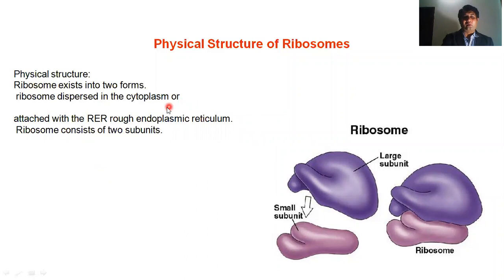Ribosomes exist in two forms: some ribosomes are freely dispersed in the cytoplasm, and some ribosomes are attached to the rough endoplasmic reticulum. So they are found in two forms.